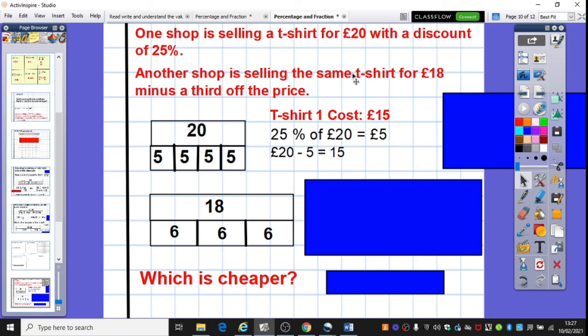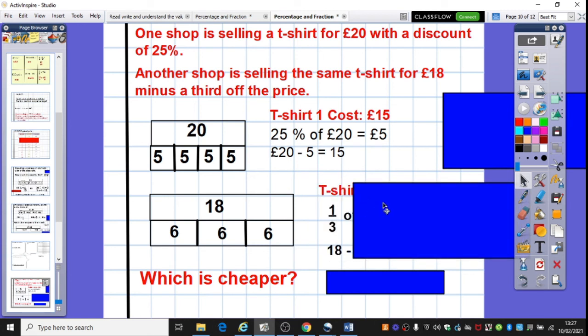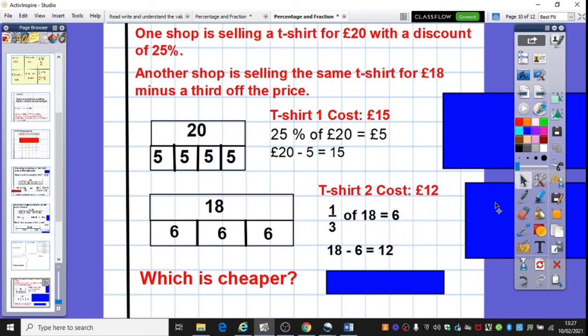I've then got another shop is selling the same t-shirt for £18 minus a third of the price. So this time I haven't got to do any conversions between percentages and fractions because actually I've been given the fraction, one third. So a third of 18. Well, in order to find a third of 18, I need to divide my 18 by 3. The answer is 6. So it's a £6 discount. So take away 6 from 18, leaves me with £12. So I've worked out the cost, the new cost of t-shirt 1 and the new cost of t-shirt 2 after their discounts.